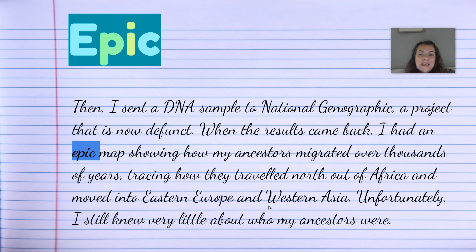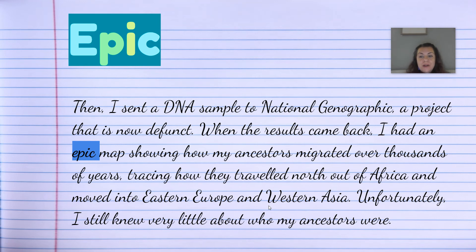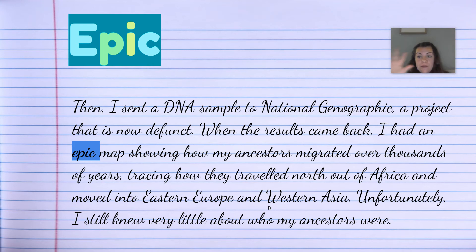'Then I sent a DNA sample to National Genographic, a project that is now defunct.' Sadly, they stopped. 'When the results came back, I had an epic map showing how my ancestors migrated over thousands of years, tracing how they traveled north out of Africa and moved into Eastern Europe and Western Asia.' It's true — they gave me this whole map and it was epic because it spanned thousands of years.